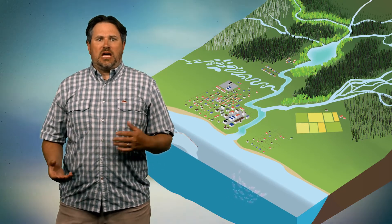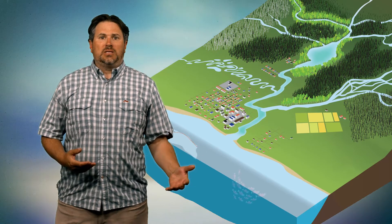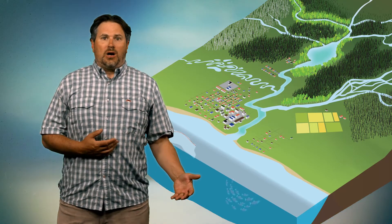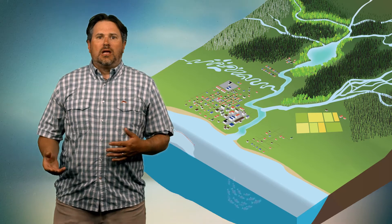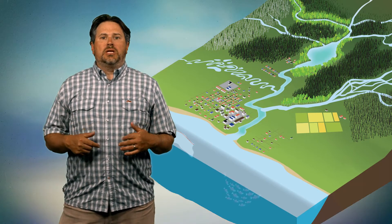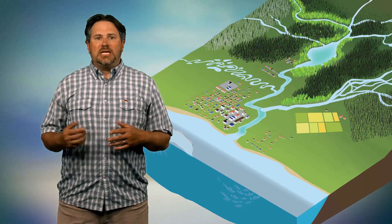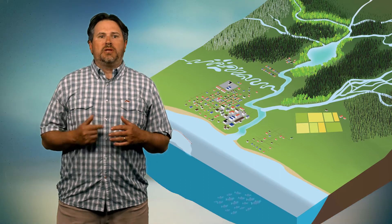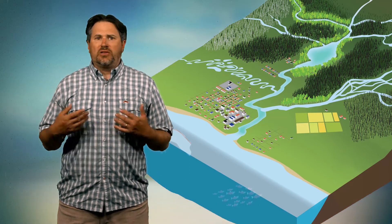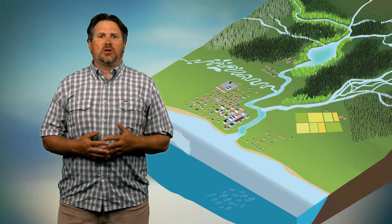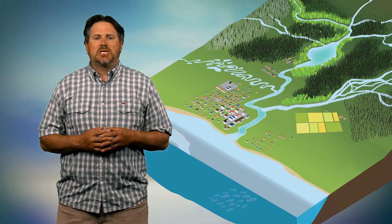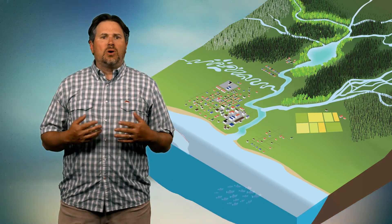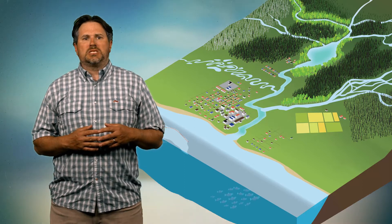Urbanized areas tend to have more concrete than a forest, and water doesn't flow through concrete — it flows off of it. When water falls on the concrete, it makes its way into rivers much more quickly, and it carries with it petroleum products and other wastes from the urban settings into those rivers. And by cutting down trees, that has a whole host of effects on freshwater ecosystems.